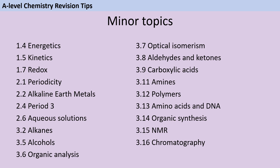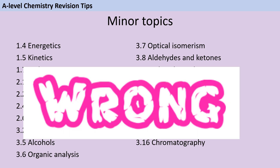There are 19 topics not listed in paper 1, paper 2, or paper 3 for A-level chemistry — so you can just stop revising those, right? Wrong. Really, really wrong. I've heard this lots of times from lots of different students and teachers, that they're just not going to revise these topics at all, and actually this is a really terrible strategy to take.